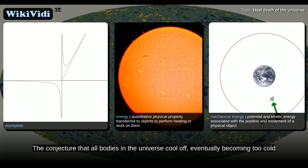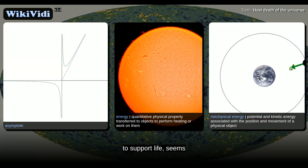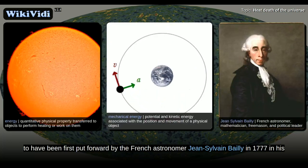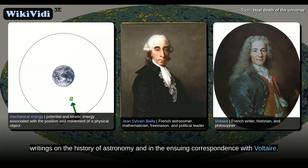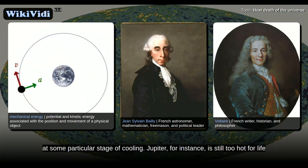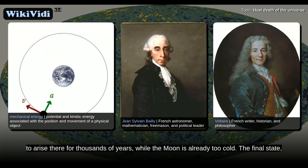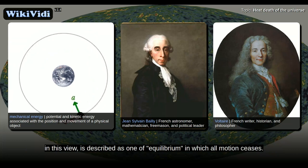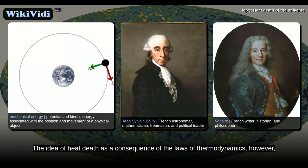The conjecture that all bodies in the universe cool off, eventually becoming too cold to support life, seems to have been first put forward by the French astronomer Jean Sylvain Bailly in 1777 in his writings on the history of astronomy and in the ensuing correspondence with Voltaire. In Bailly's view, all planets have an internal heat and are now at some particular stage of cooling. Jupiter, for instance, is still too hot for life to arise there for thousands of years, while the Moon is already too cold. The final state, in this view, is described as one of equilibrium, in which all motion ceases.